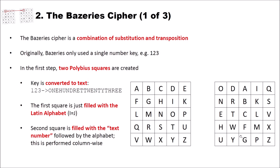So after the first step, we have the standard alphabet Polybius square and the Polybius square created on the text key that is based on the number key.